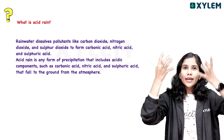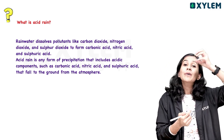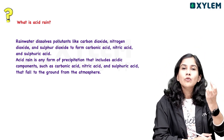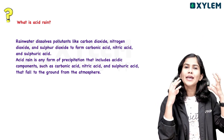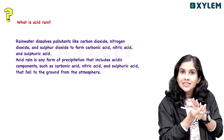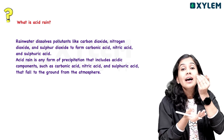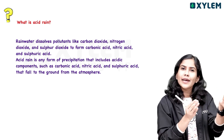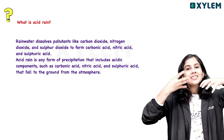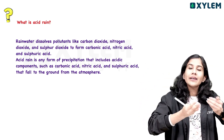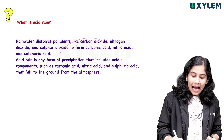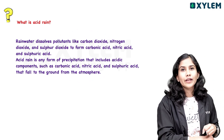We have to dissolve these gases in rainwater at the next level. When it is dissolved, it creates a clear effect. When it is dissolved in the area, it becomes an acidic solution for most of us. We have to assess the acid that forms at the next level.